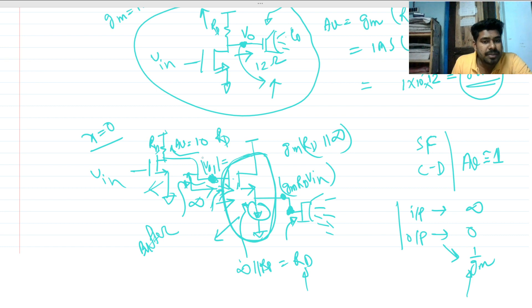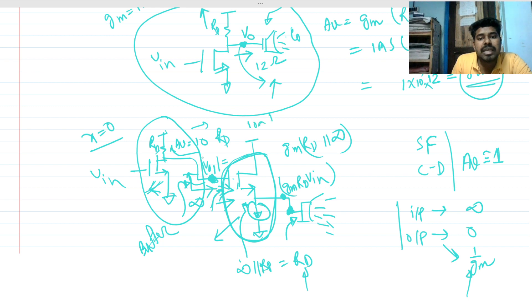This is the main reason to use the source follower: the preceding CS amplifier circuit sees no loading effect because the input impedance presented by the source follower is effectively infinite.